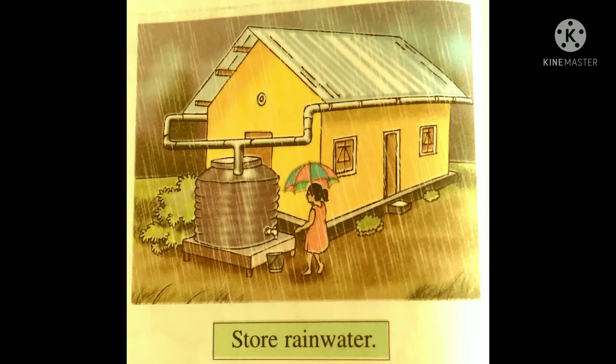The sentence says: 'Shut off the tap after use.' See here — the tap is full but water is going to waste. Don't let the water overflow — shut it off. The next picture is about storing rainwater. When it rains heavily, we can store that rainwater in a tank on top of the house so we don't face a water shortage.